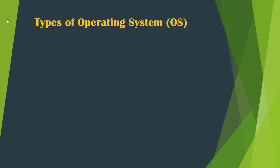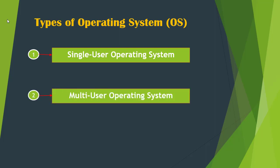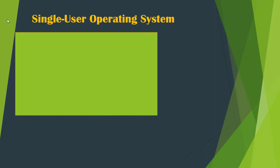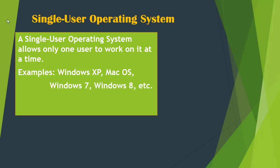Now let's see the types of operating system. The short form of operating system is OS. There are two types of operating system. Number one: Single User Operating System. Number two: Multi User Operating System. A single user operating system allows only one user to work on it at a time. Examples are Windows XP, Mac OS, Windows 7, Windows 8, etc.